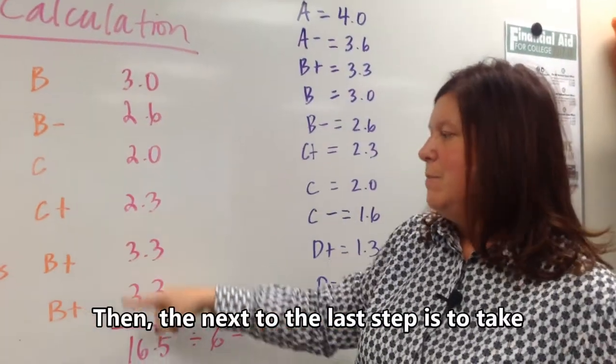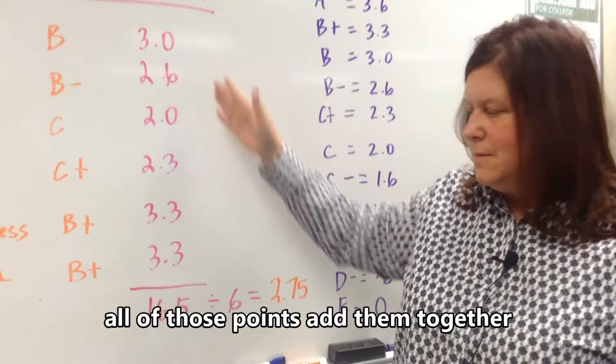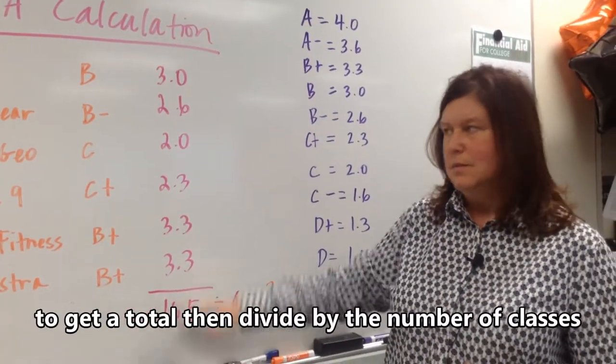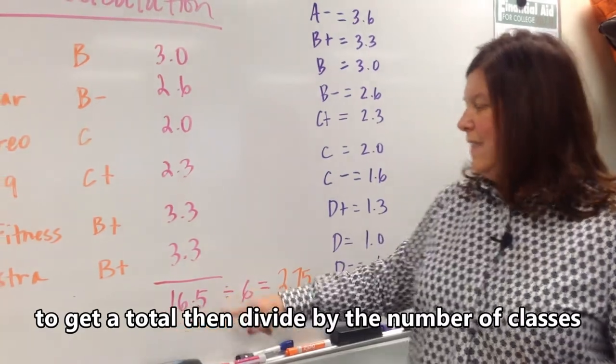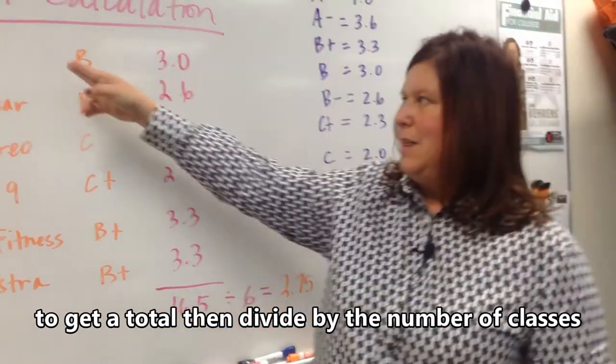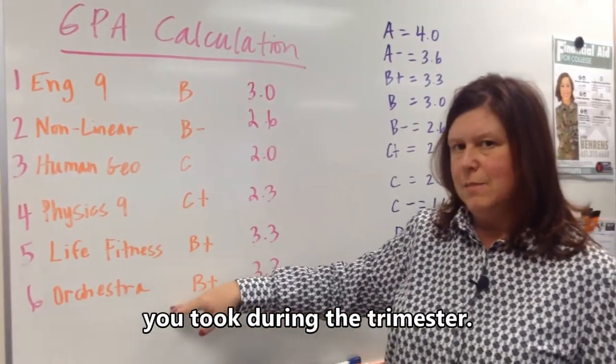Then the next to the last step is to take all of those points, add them up to get a total. These points total 16.5, and then we're going to divide by the number of classes that you took during the trimester.